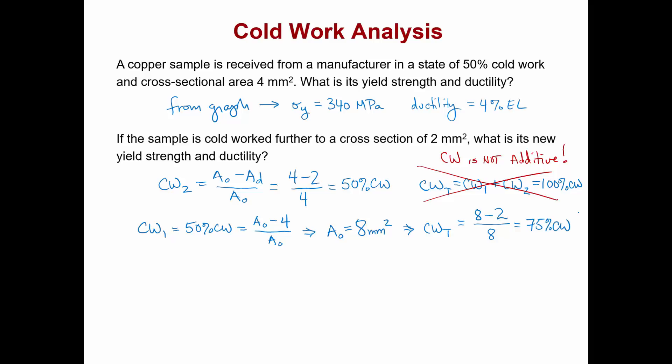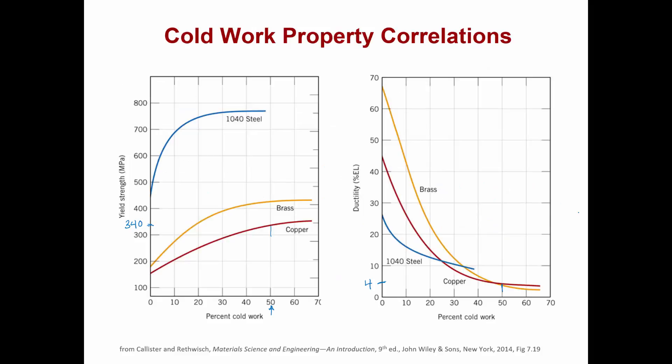So then we might wonder what would be the yield strength and ductility for this 75 percent cold work sample. If we go back to the graphs and look for 75 percent cold work, we notice that the graphs actually end before we reach this point.